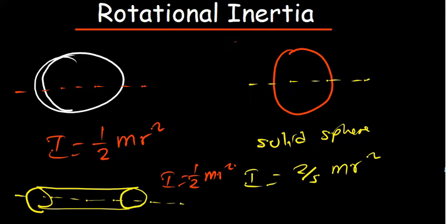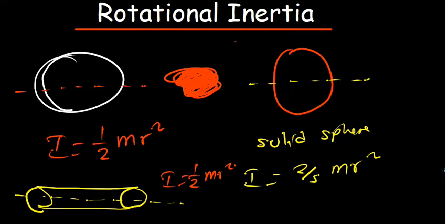To recap: the inertia of a disk is half mr²; a solid sphere is 2/5 mr²; a cylinder is also half mr². For a point mass — such as a person where the mass is concentrated at one point — the inertia is mr². Now that we know these formulas, let's solve some questions under the same topic.